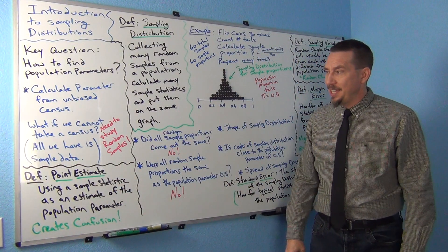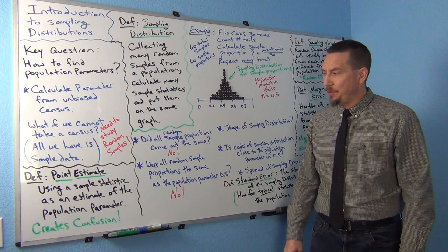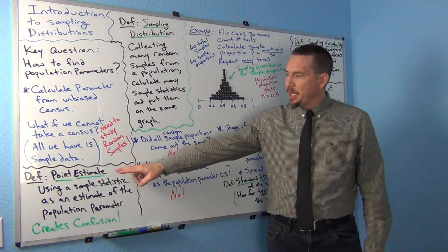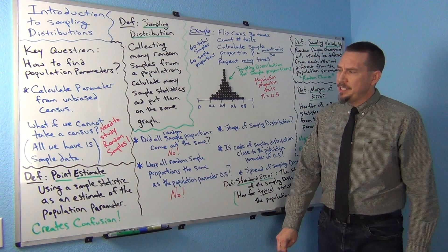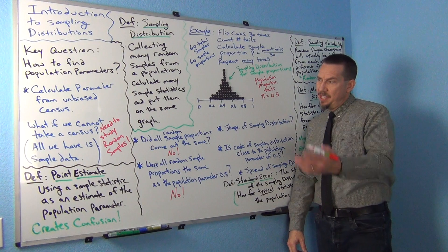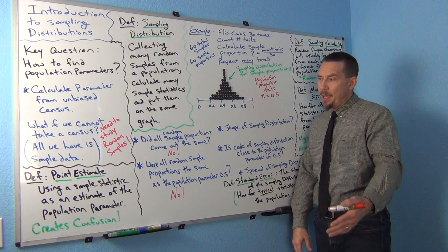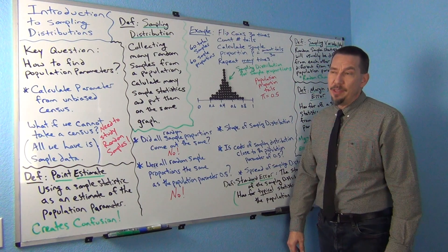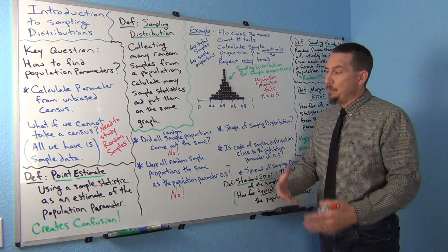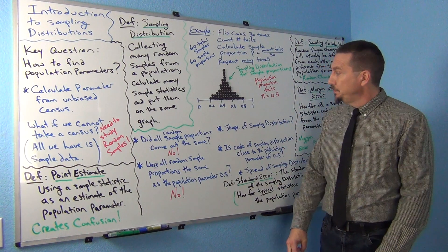So it creates a lot of confusion, especially for students. Be wary of this — a lot of times when people claim to say things about the entire population, it may be that they really got that number from a sample.